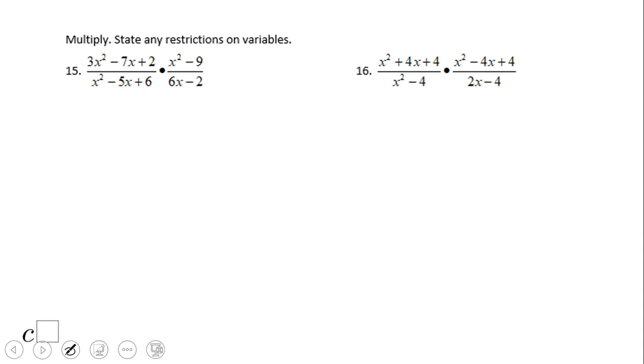Let's take a look at two more examples, and again, the same story. We're going to need to factor out. What about 3x squared minus 7x plus 2?